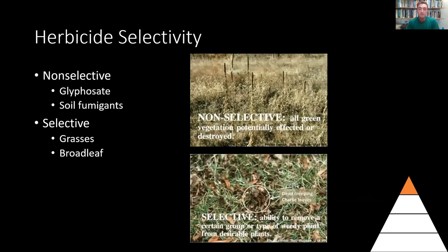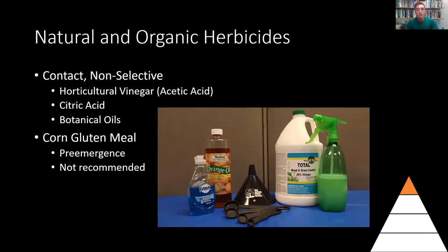Selective versus non-selective herbicides: non-selective herbicides go after any kind of growing plant — an example would be glyphosate, which is very popularly used. Soil fumigants are other types of non-selective herbicides. Selective herbicides will only go after grasses or only go after broadleaves. The benefit with selective herbicides is not only that you reduce the chance of targeting something you don't intend to kill, but you can apply these chemicals in the middle of growing plants and have proper herbicide control without damaging the desired plant.